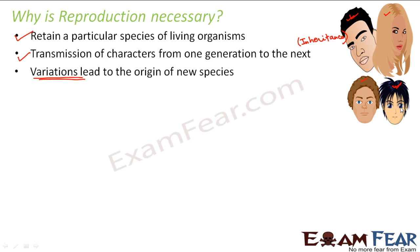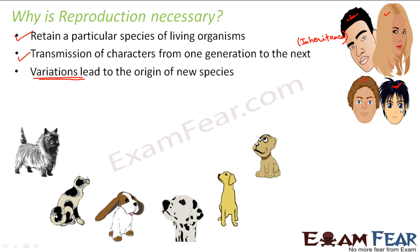Instead, let us look at the example of dogs. On the screen you can see a variety of dogs — all of them are dogs, but do they all look similar? No. All of them have different features, different characters, and different traits, yet they are all dogs. This is nothing but a result of variations. Maybe it all started with just one single variety of dog a very long time ago.